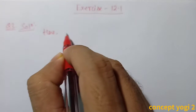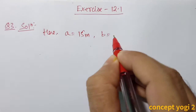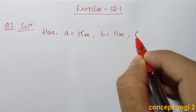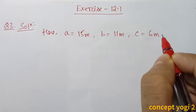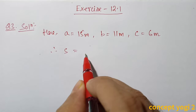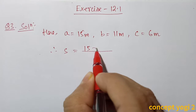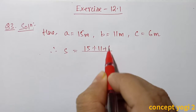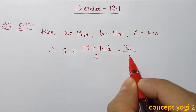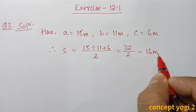Here a = 15m, b = 11m and c = 6m. Therefore, we will find the semi-perimeter. Semi-perimeter is the sum of all the sides divided by 2. So 15 + 11 + 6 divided by 2 gives 32 by 2, which equals 16. So s = 16m.